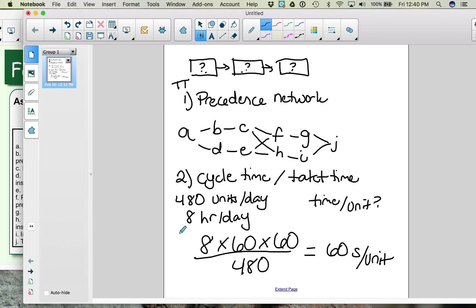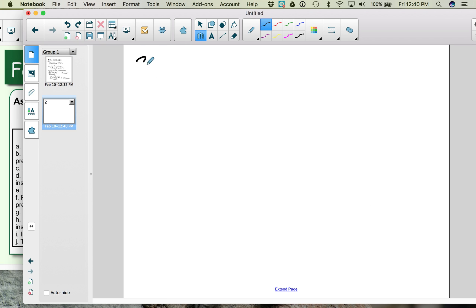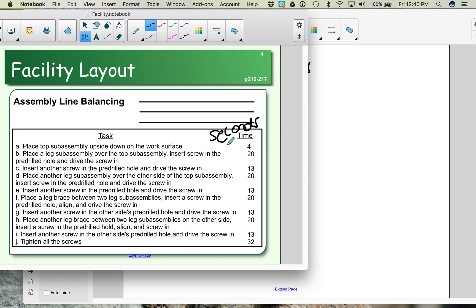So the next step in our process is going to be to figure out how many workstations we're going to need. So to do this, to figure out the number of workstations, so step 3, we need to look at those activities and how long they take. So activity A takes 4 seconds, B takes 20, C takes 13, D takes 20, E takes 13, F takes 20, G takes 13, H takes 20, I takes 13, J takes 32. If we add them all together,